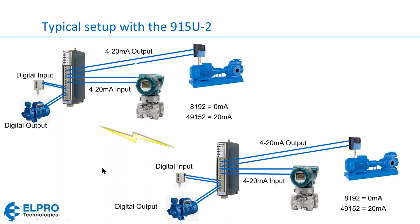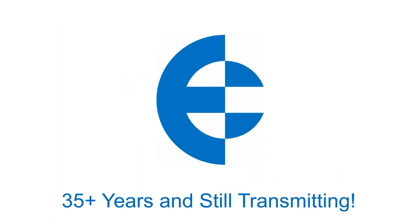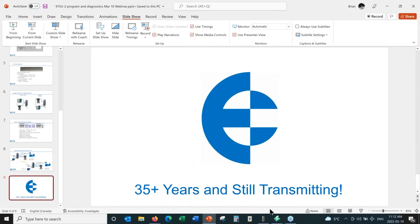That's primarily it for the PowerPoint portion. The next thing we're going to do is head to our meshing configuration software to set up these radios. But one of the first things we need to do is find out the IP address of the radio we are connected to.